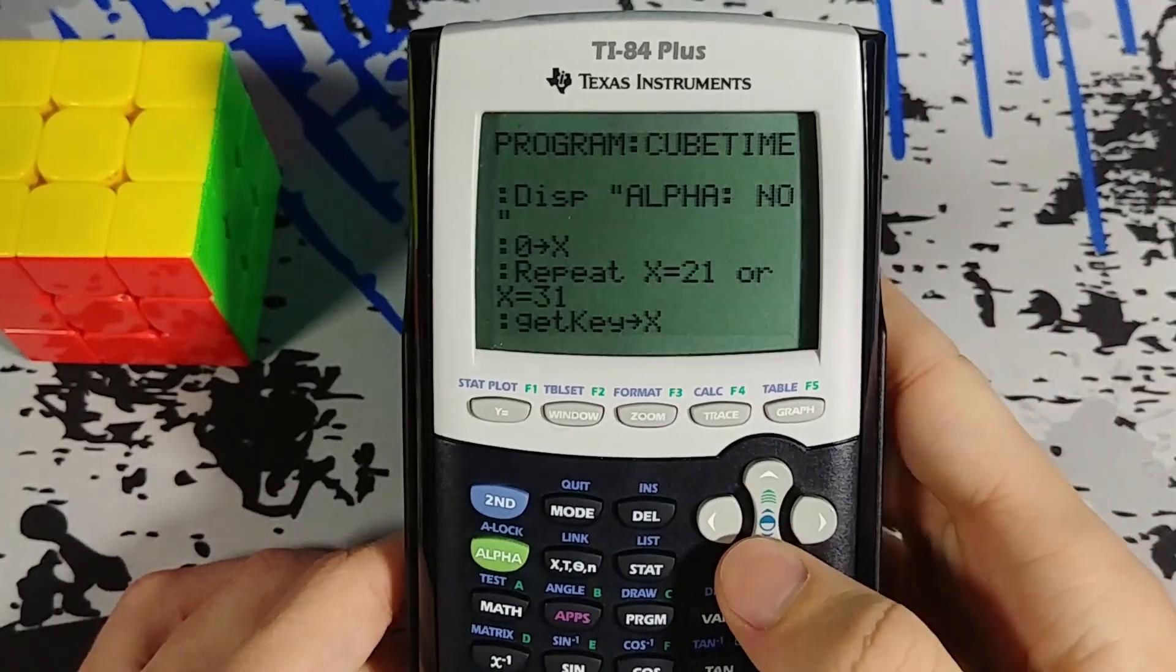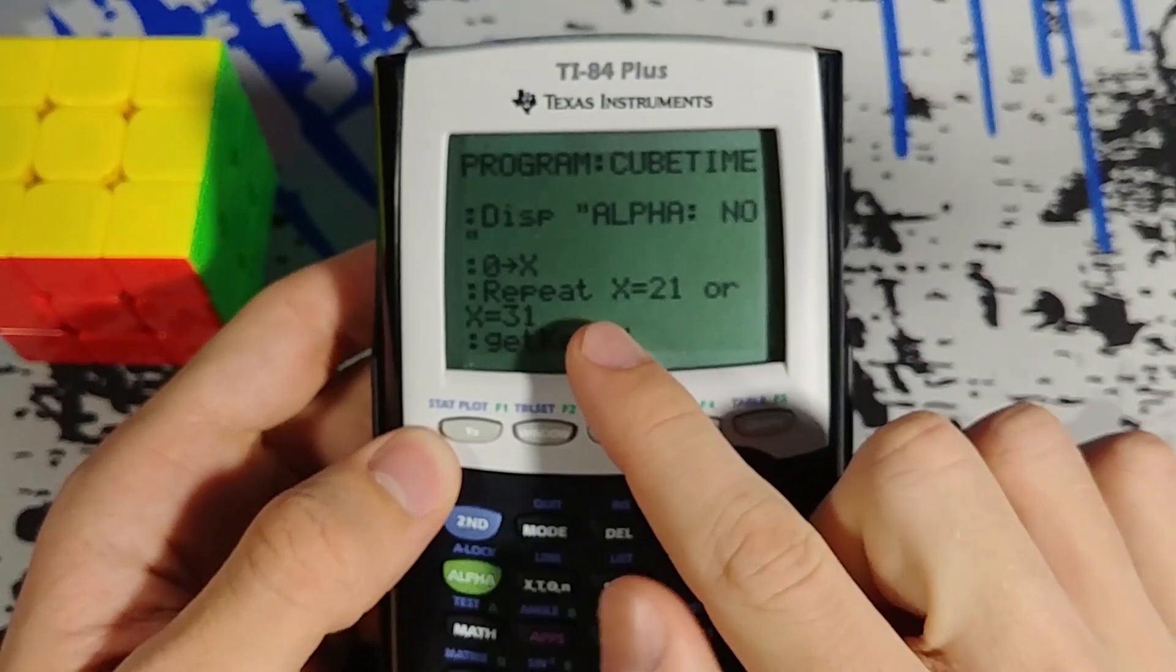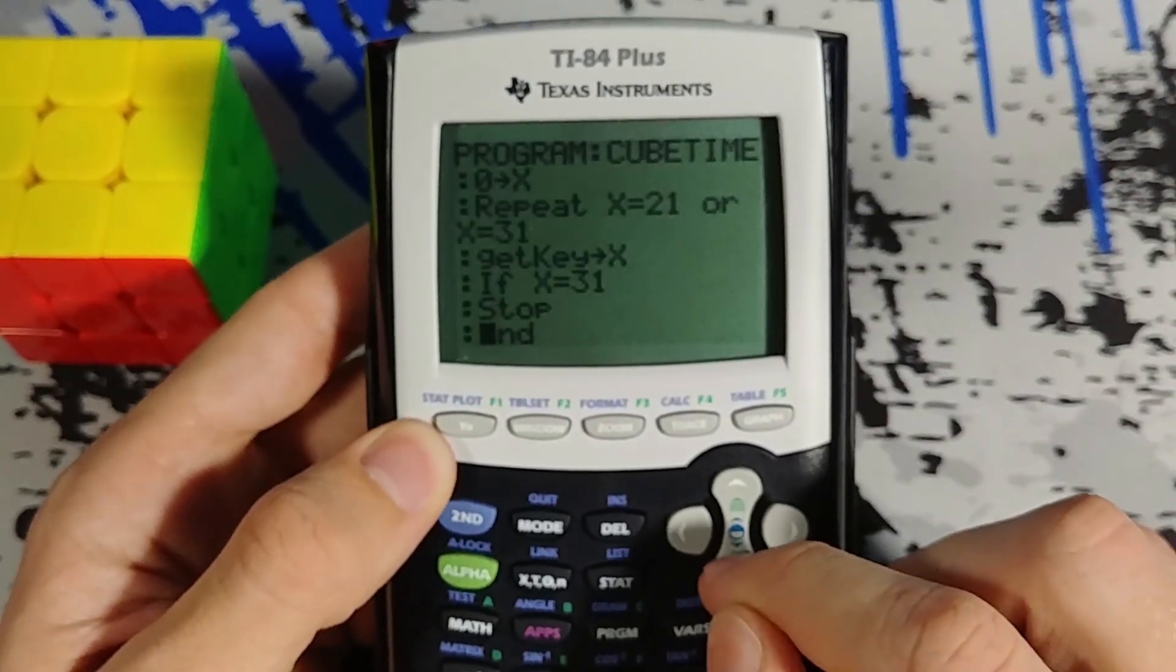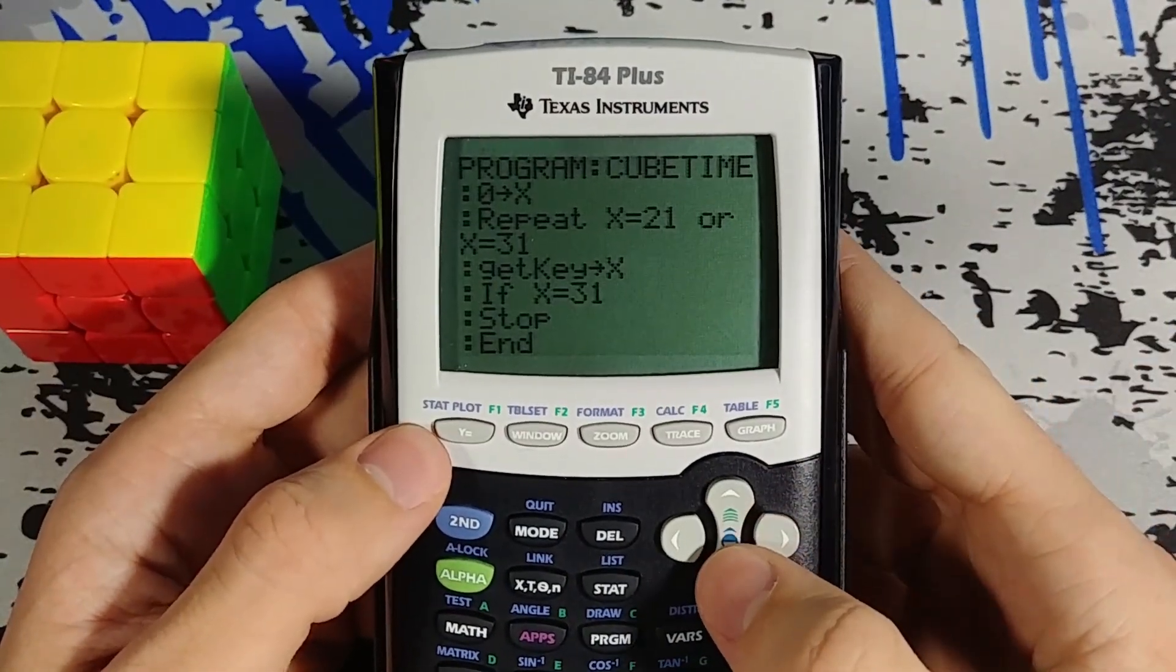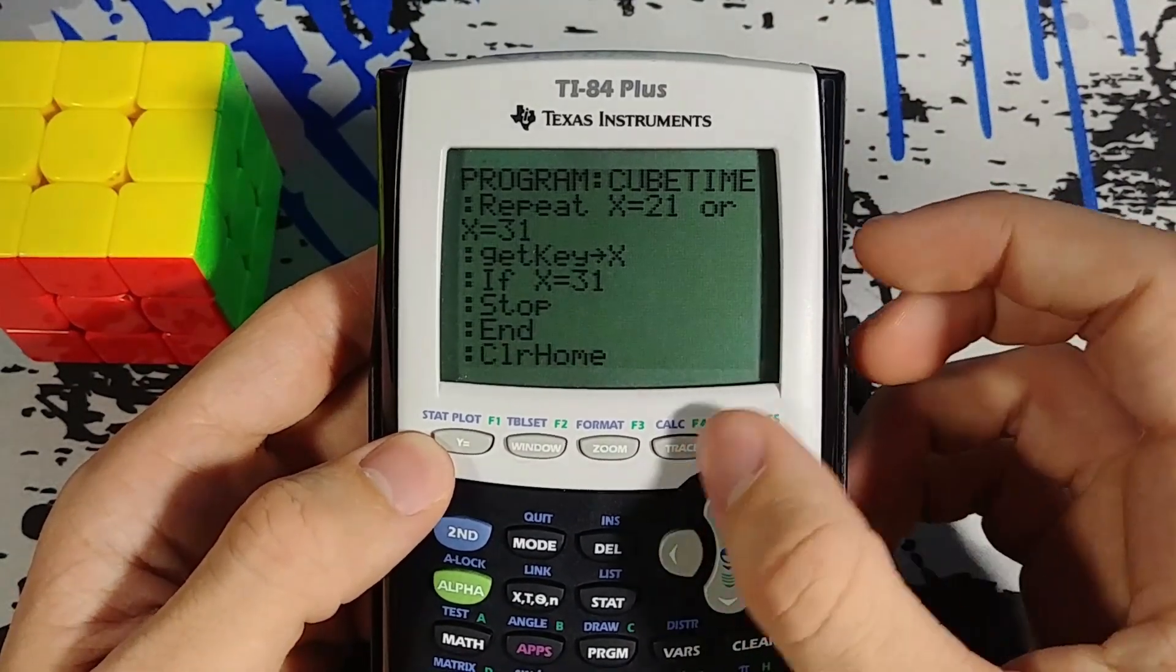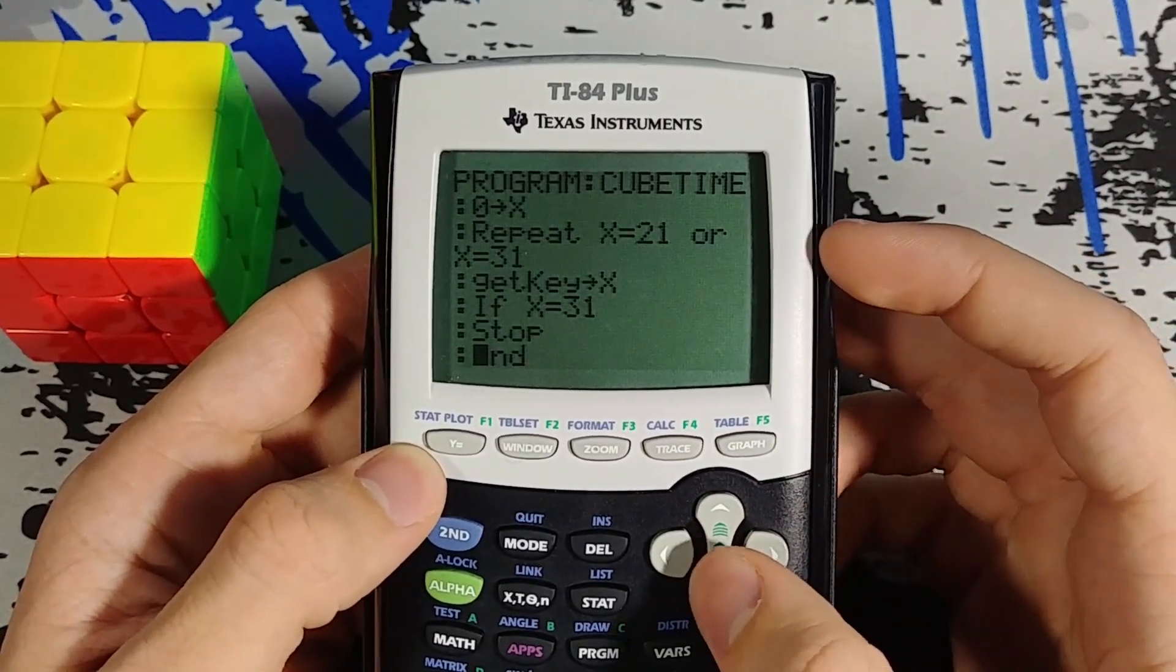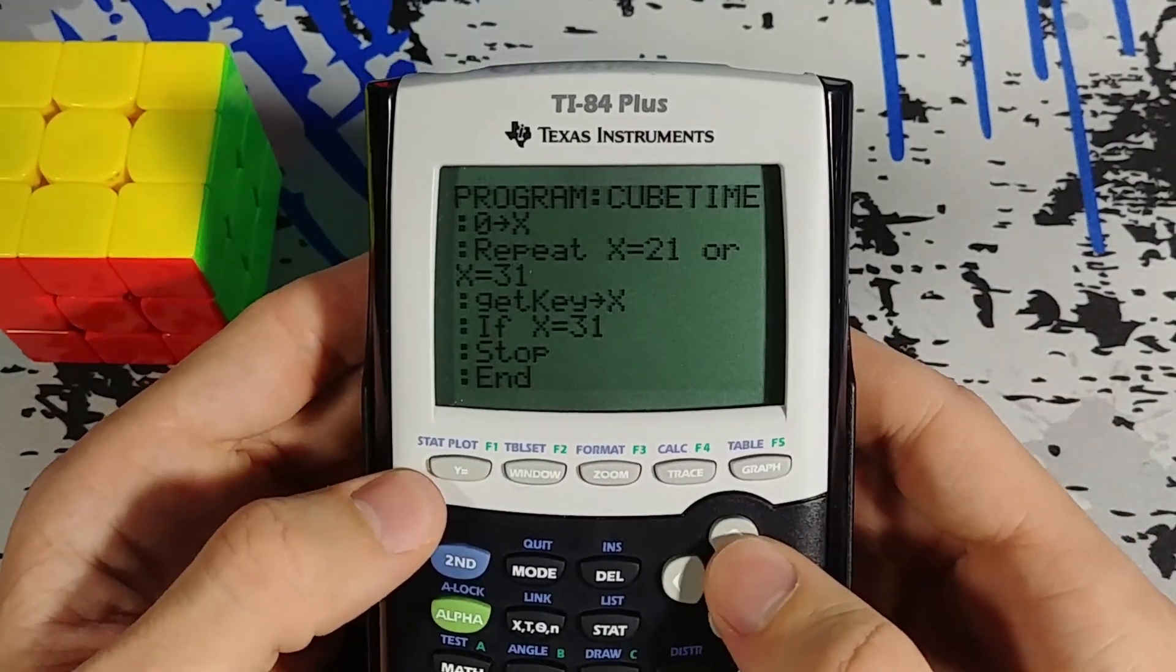So now I'm starting a repeating function. And here you can see it says repeat x equals 21 or x equals 31. So this repeat function is going to keep repeating itself until x either equals 21 or x equals 31. So here's the entire repeat function here. It's repeat and then end. End marks the end of the repeating function.